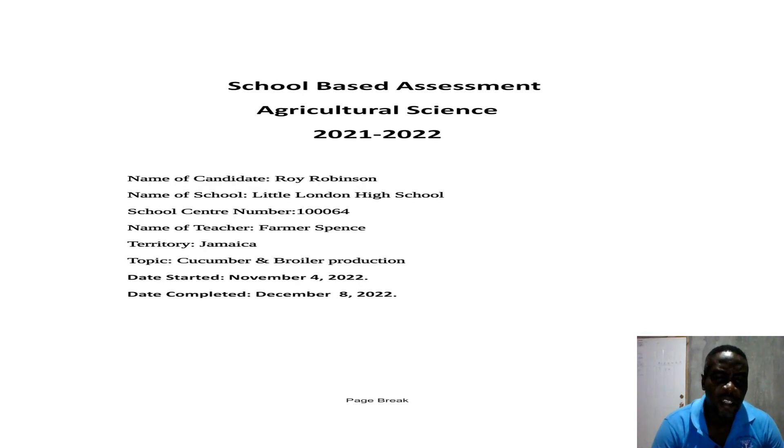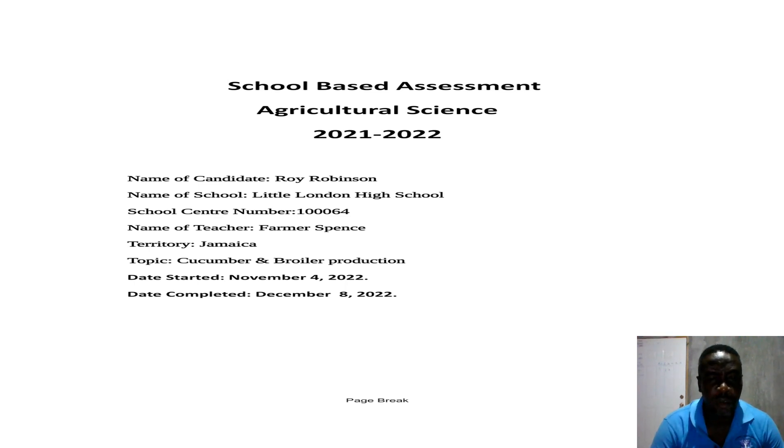Your cover page needs to have 'School-Based Assessment' at the top, then 'Agriculture Science 2021–2022' or 2022–2023, depending on the year. Right below that you could drop a picture — whether crops, wild birds, or whatever picture you have. Then your name as candidate — your name is very important, so make sure you spell your name correctly. Look on your birth certificate to make sure you have the right spelling. You don't want to make any spelling errors with CXC.